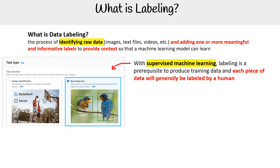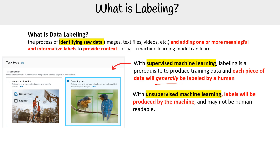Each piece of data will generally be labeled by a human. The reason I say generally is because with Azure's data labeling service, they can actually do ML-assisted labeling. With unsupervised machine learning, labels will be produced by the machine and may not be human readable.